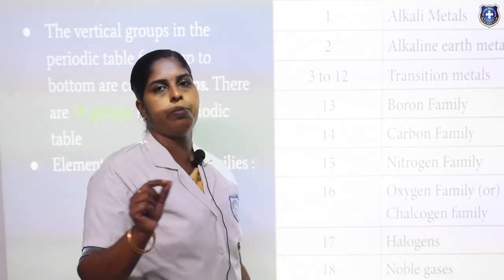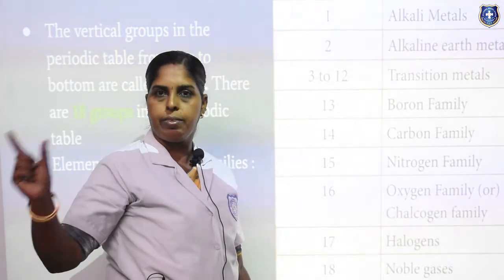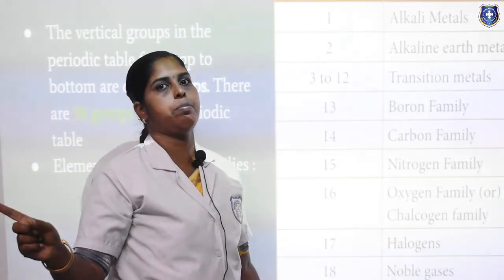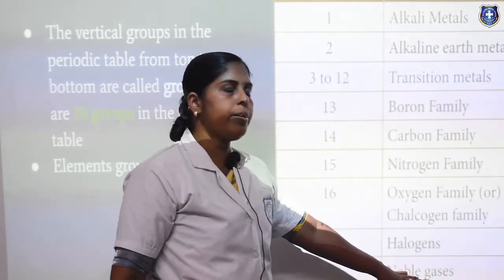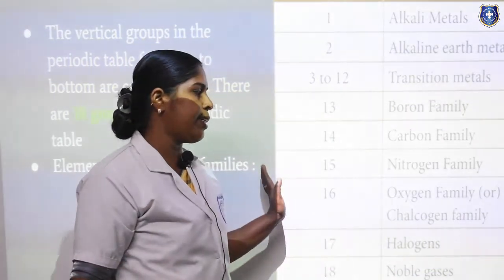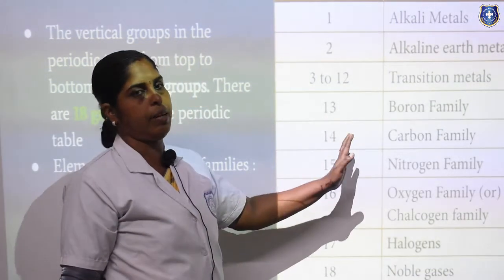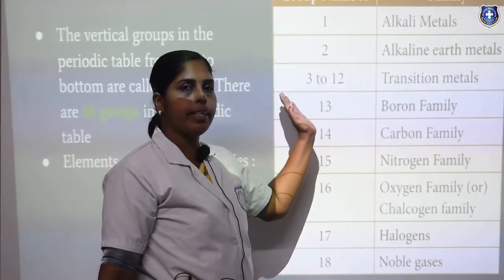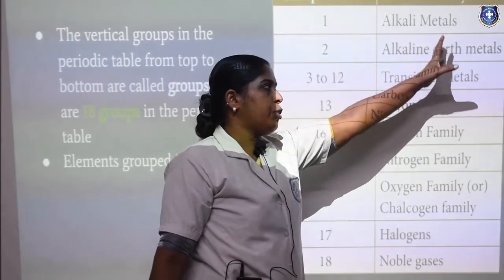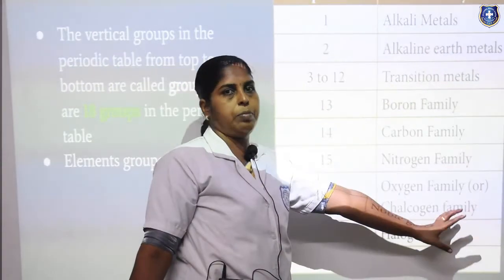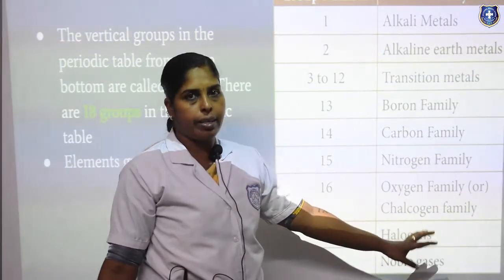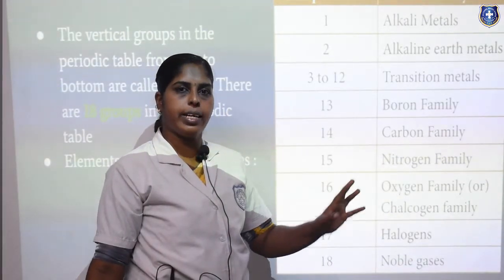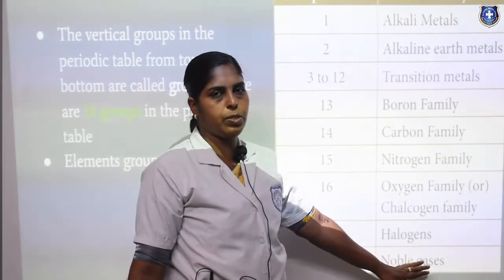We already learned that if an element reacts with other elements, it means the outer shell is incomplete. But for noble gases, all the outer shells are completely filled. So from left to right in the periodic table, atomic number increases by one, and the last group contains completely filled elements — known as noble gases, inert gases, or zero group elements. They are inert in nature and do not react with any other elements.